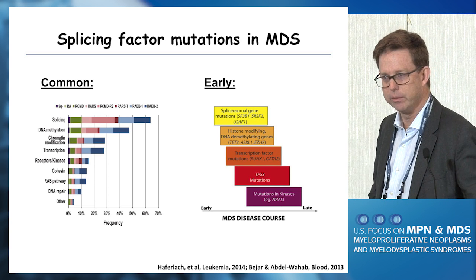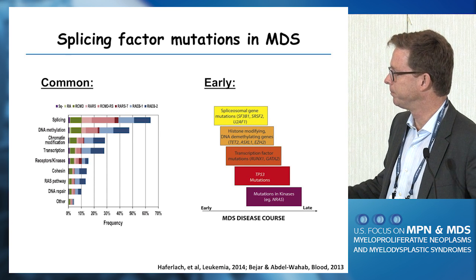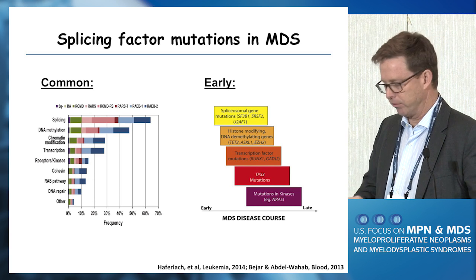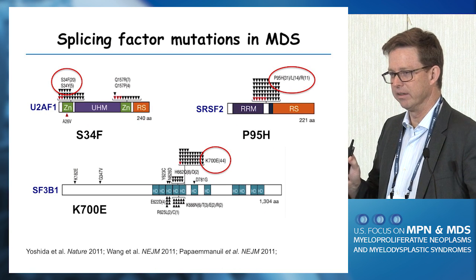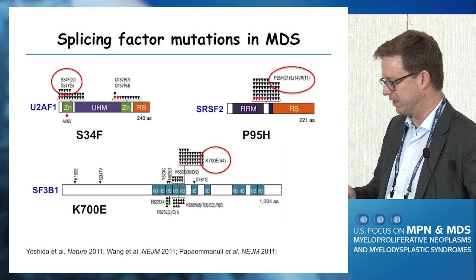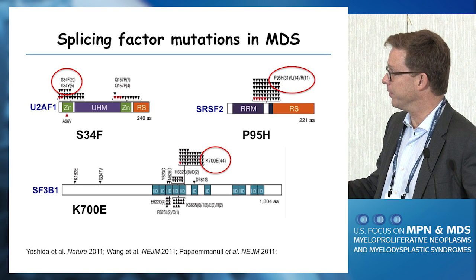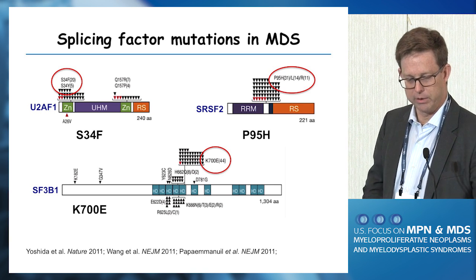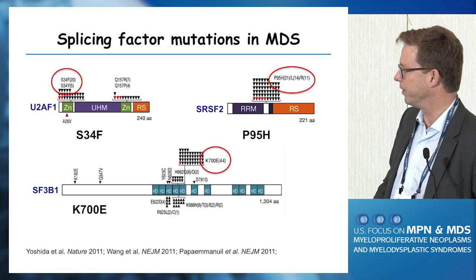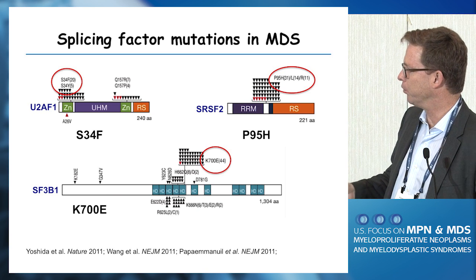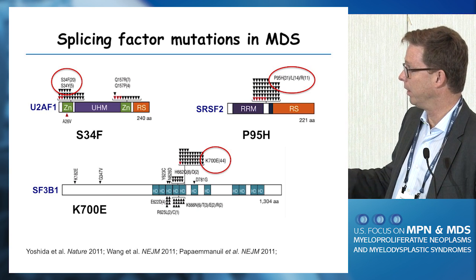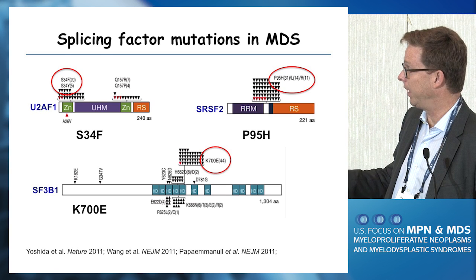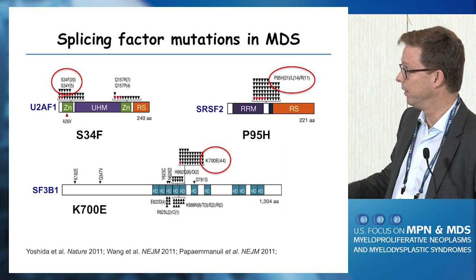Splicing factor mutations are the most common pathway we now recognize altered in MDS — more than 60% of patients will have a mutation in an RNA splicing factor, and they tend to occur early, frequently in that initial ancestral or founding clone. Just to highlight a couple of important features: the three major players are U2AF1, SRSF2, and SF3B1. The mutations are always heterozygous and mutually exclusive — if you acquire one, you don't acquire a second one of these in the same cell. And the mutations are not scattered randomly; for these three genes they are highly enriched, clustered in so-called hot spots.